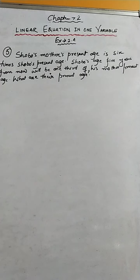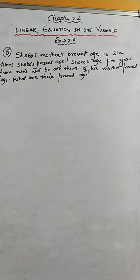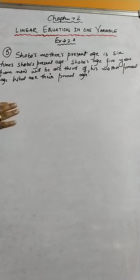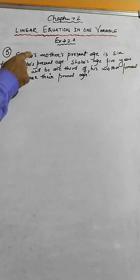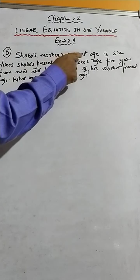Hello students. In this session I will explain question number five of exercise 2.4, chapter 2: Linear Equations in One Variable. This is another very important question of this exercise. This type of question is called an age problem.